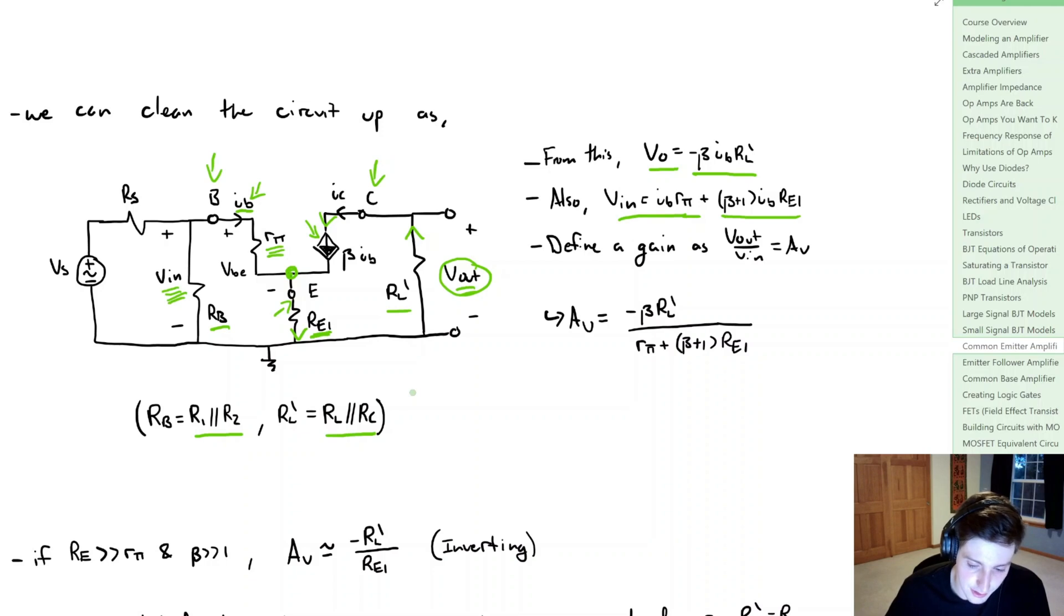Now the reason that we're going to do this is because we're going to define some gain as we did in the early videos in this course. So if we define some voltage gain as the output voltage divided by the input voltage, or Av, what we get is that the voltage gain is equal to this term here. And that's just taken from what we found above for the input and output voltages.